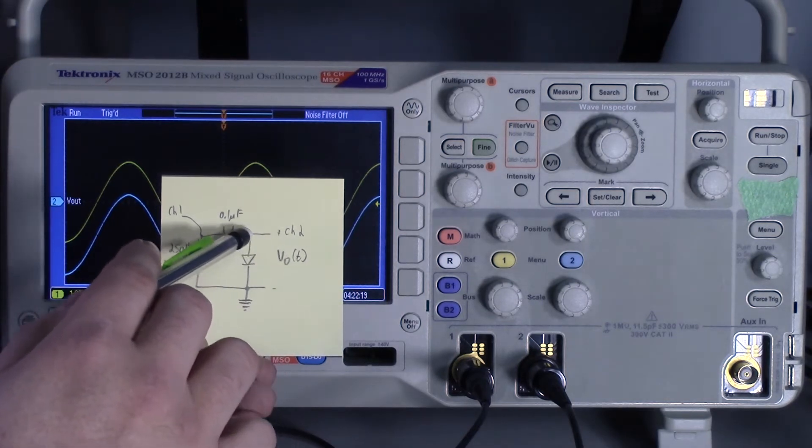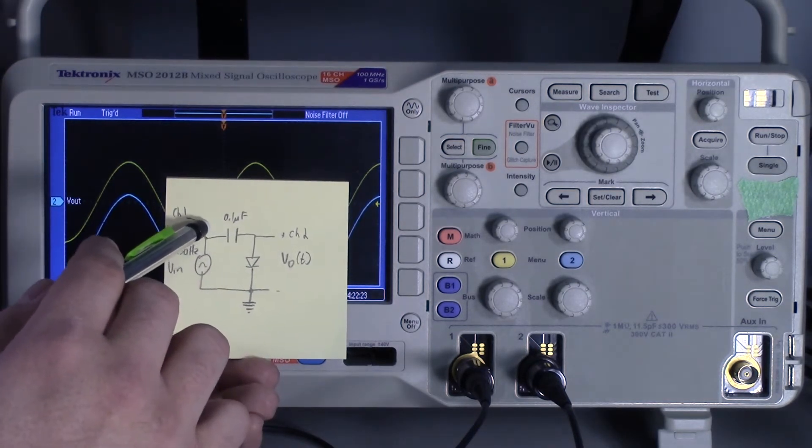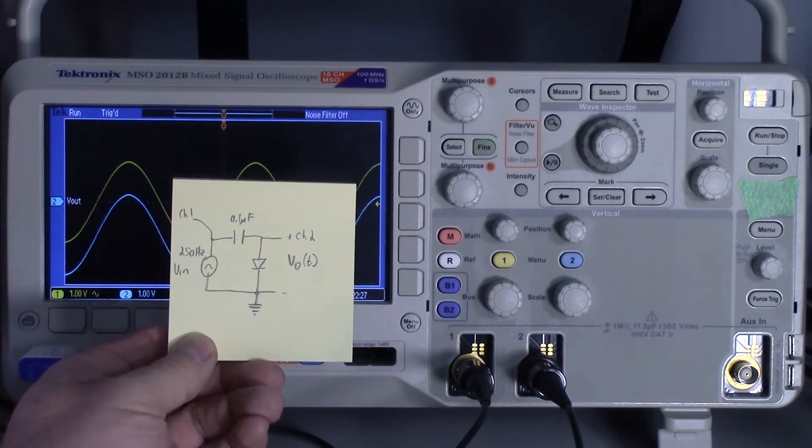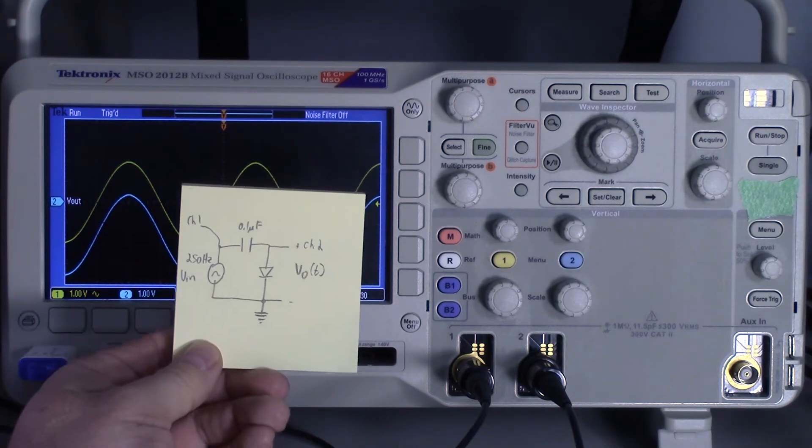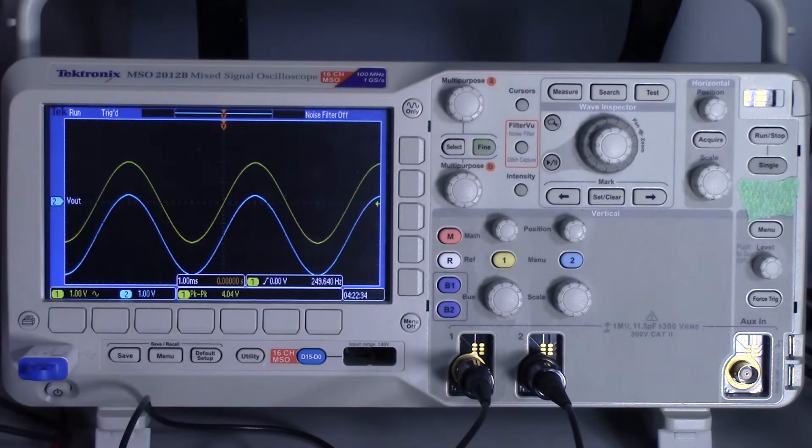Channel 2 is measuring the output signal of the clamping circuit. So basically I'm measuring both sides of the capacitor. So if I want to know what this DC offset voltage that the capacitor is adding to the circuit, there's one of two ways I can measure it.